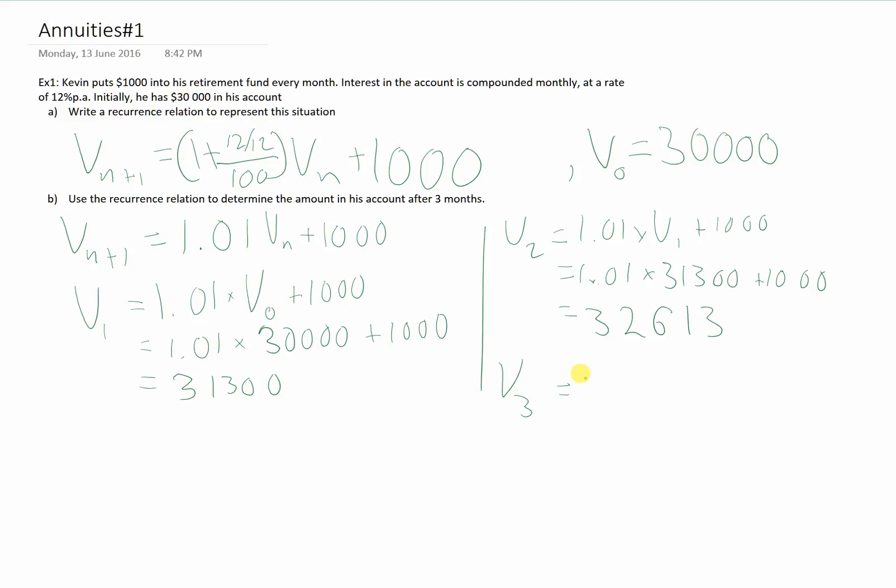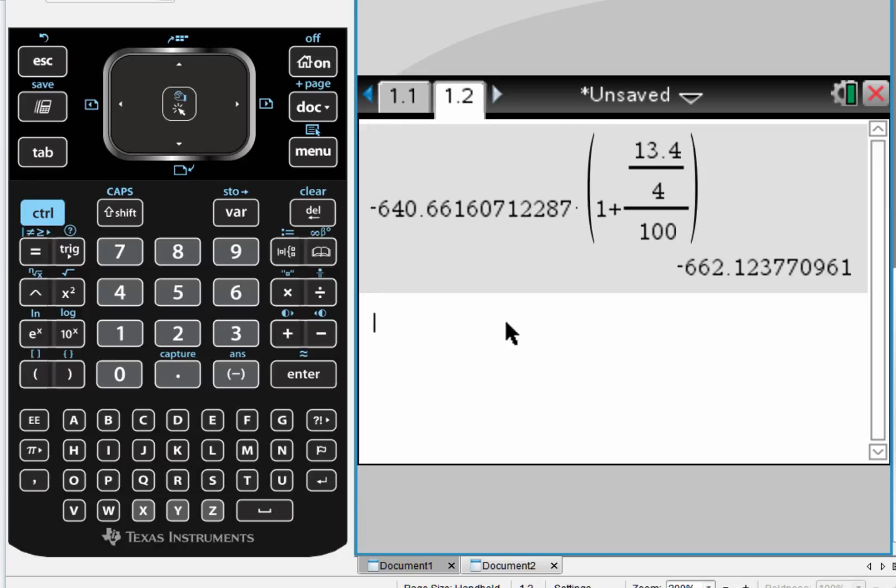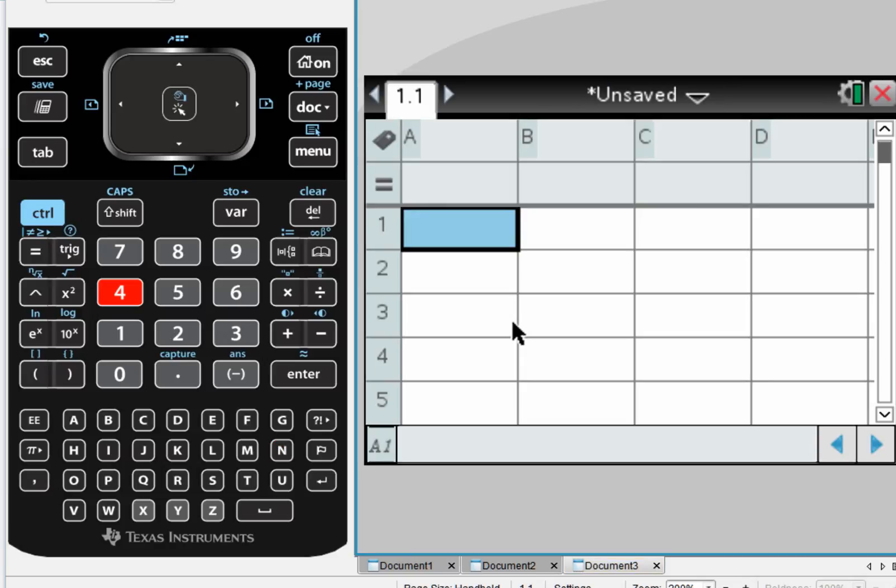We've got 1.01 times V2 plus 1,000, which is 1.01 times 32,613 plus 1,000. Which, when we calculate that, a couple of the zeros didn't show up there, is $33,939.13.